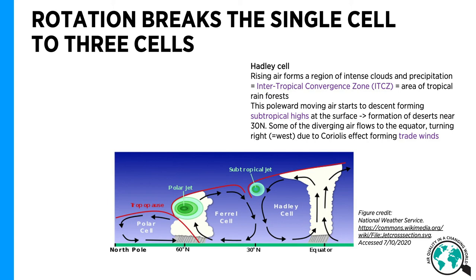Descending air forms subtropical highs and dry areas around the horse latitudes. Some of the diverging air flows to the equator, turning right, so to the west, forming the trade winds.